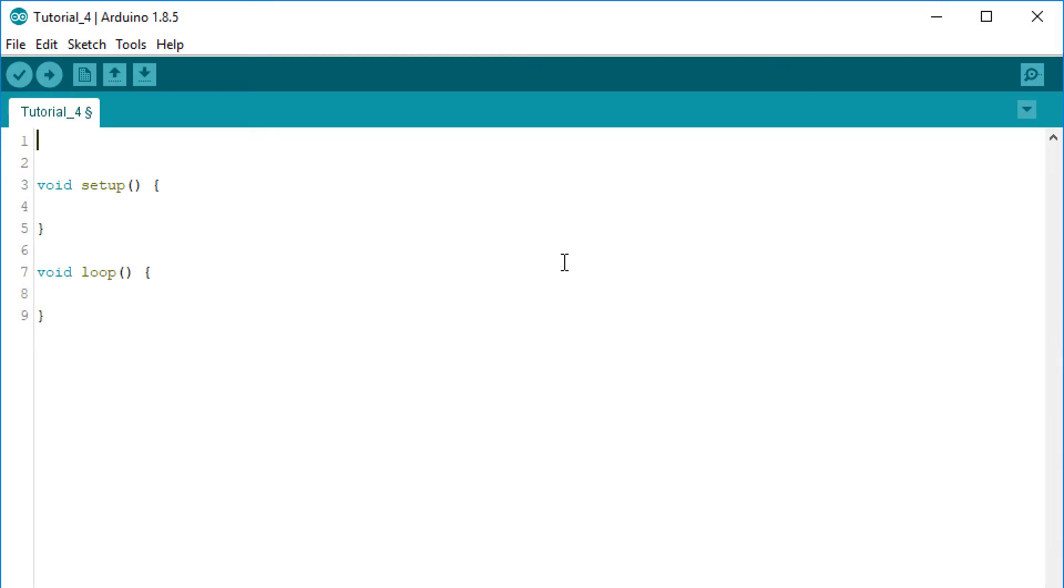As usual we start by declaring the variables. We got 3 pins, red, green and blue. In the void setup we set them up as outputs.